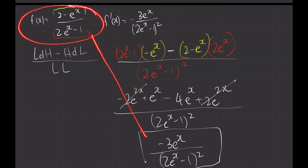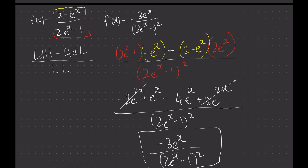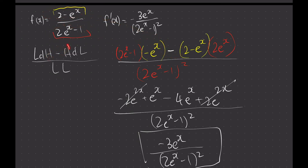So we successfully showed that differentiating f(x) gives the result using quotient rule. The hint is: quotient rule is low d high minus high d low over low squared. Copy the low, d the high which becomes this, the minus here corresponds to this minus, and then copy the high, d the low.